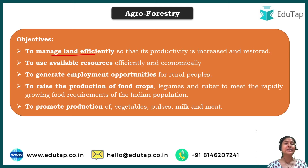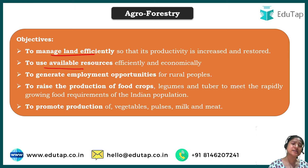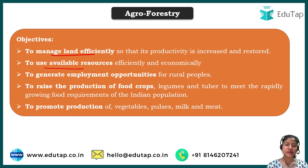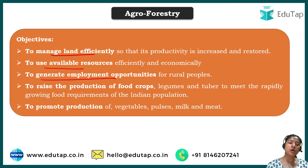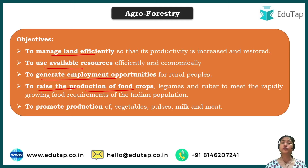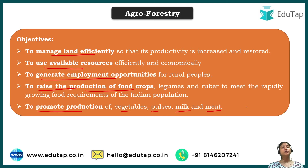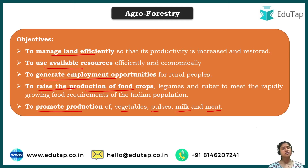The objectives of agroforestry include: managing land efficiently by using space between trees; utilizing available resources that would otherwise be wasted; generating employment opportunities, since agricultural practices require labor; and raising the production of food crops, vegetables, pulses, or even milk and meat through livestock. When livestock are also included, it still falls under agroforestry because agriculture is a broader concept that involves both plants and animals.